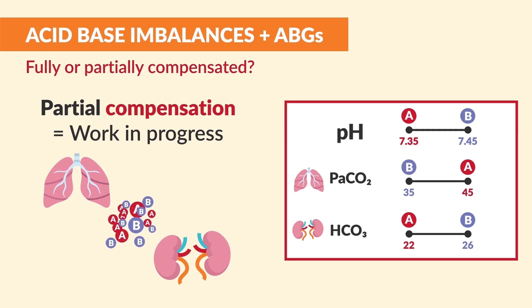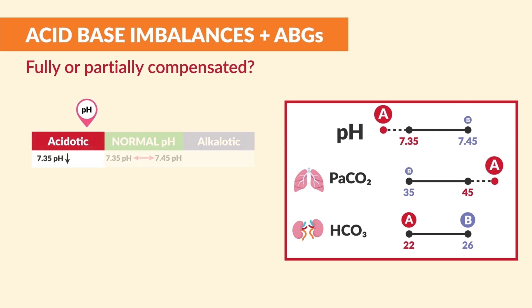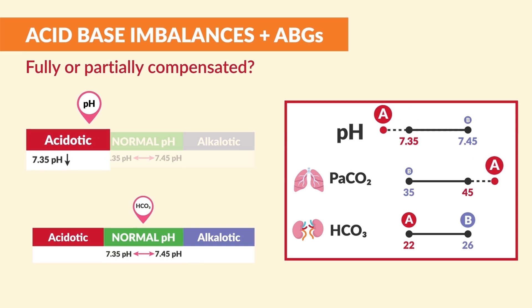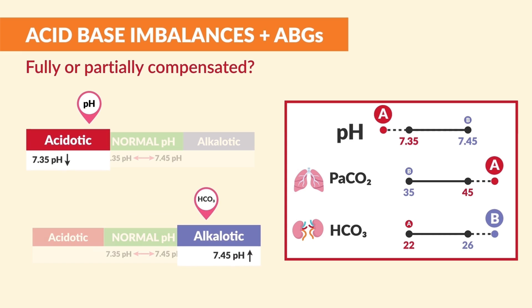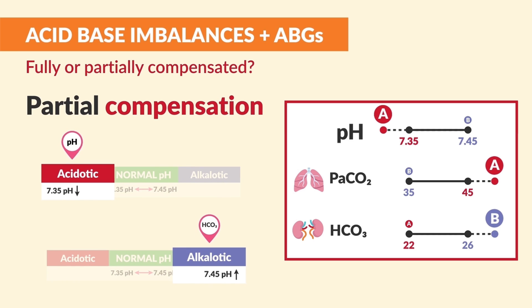For example, say the pH is acidic. Then bicarb, that base, will try to increase to balance it out. If the pH is still acidic but bicarb is high, then it's partially compensated.